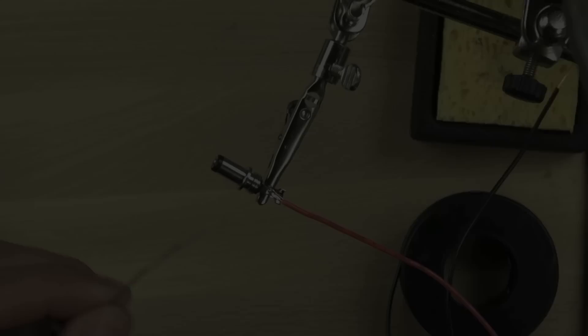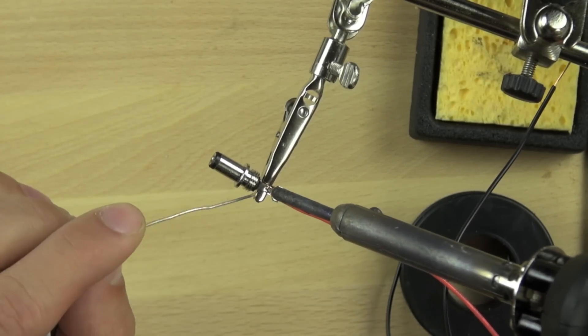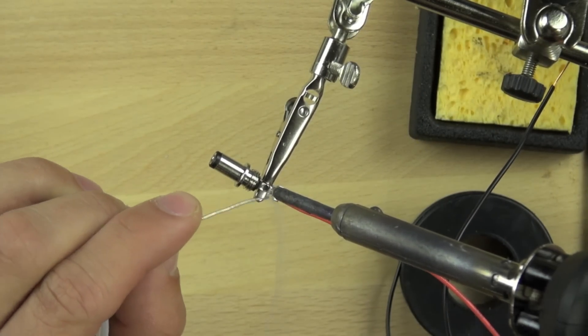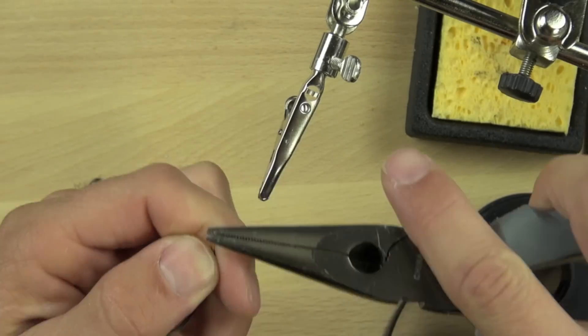Then we're going to solder the wire so that it stays where we put it. We're using our alligator clip on the helping hands to hold it in place.